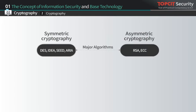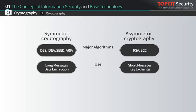DES, IDEA, SEED, and ARIA developed in Korea are the main examples of symmetric cryptography, while RSA is a major asymmetric cryptography. Symmetric cryptography is generally used to encrypt long messages and data. On the other hand, asymmetric cryptography is used for safely sending short messages and keys.